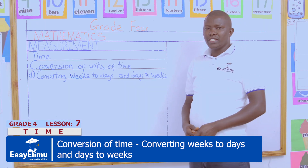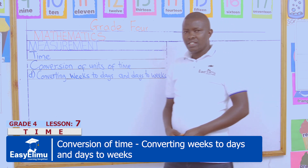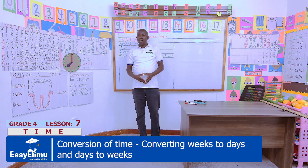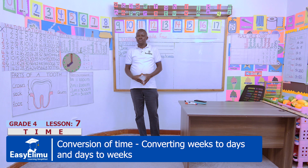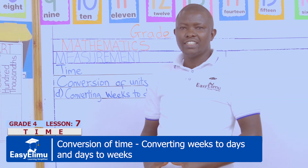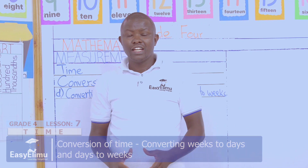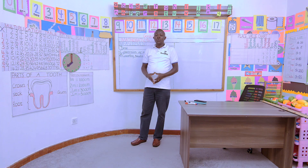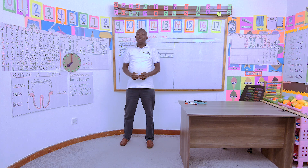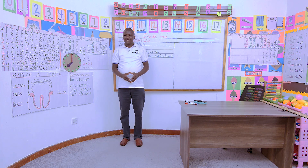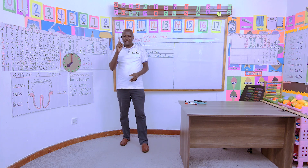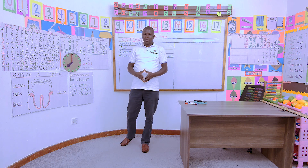Converting weeks to days and days to weeks. How do we tell time? In our previous lesson, we learned how to convert hours into days. And we said one day has 24 hours.